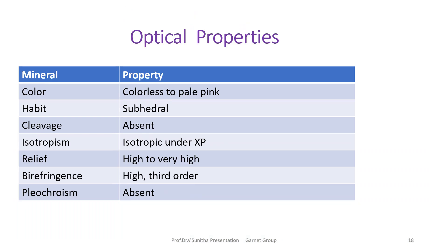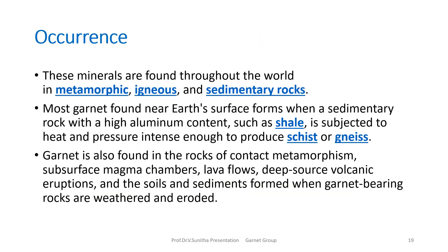The optical properties include colorless to pale pink color in thin section, sub-hedral habit, and absent cleavage. Garnet group minerals are isotropic under crossed polars, and they have high to very high relief. Birefringence is notable as high third-order birefringence, and pleochroism is absent.